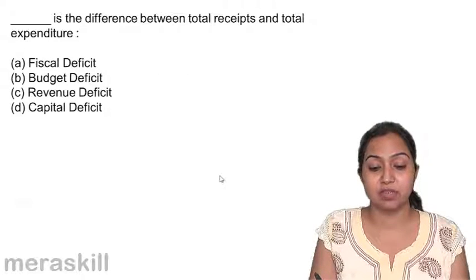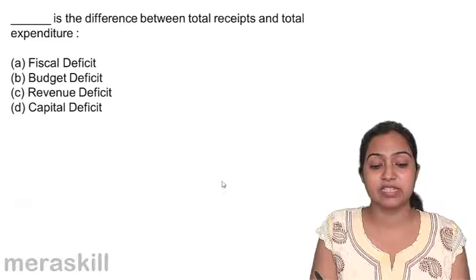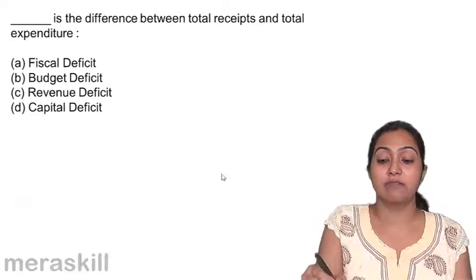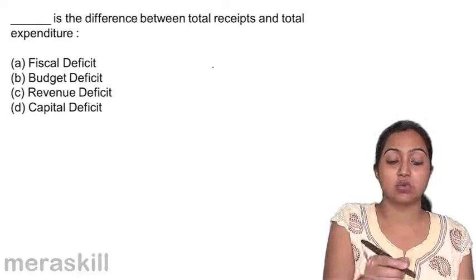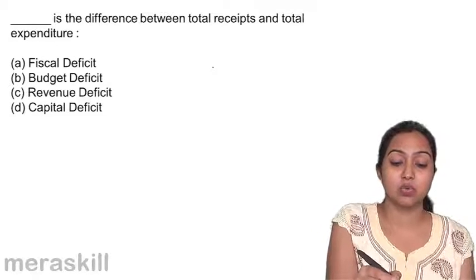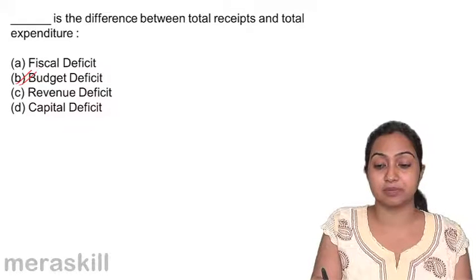Now, let us see what you have learned. The dash is the difference between total receipts and total expenditure. When we talk about total receipts and total expenditure, the difference between the two — we're talking about the budget deficit.